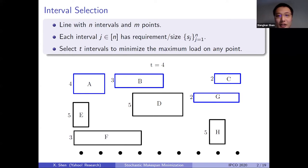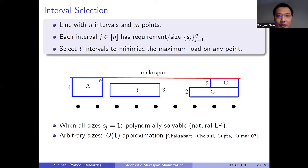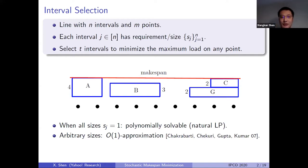In this example, the blue intervals form the optimal solution and the corresponding mixed span is four. If all the sizes are uniform, this problem can be solved in polynomial time because the corresponding LP relaxation has a totally unimodular constraint matrix. If the sizes are arbitrary, then a constant approximation is known.